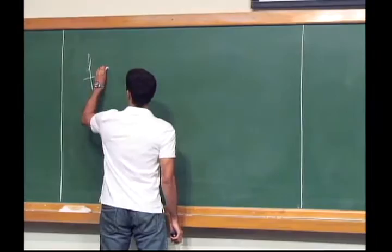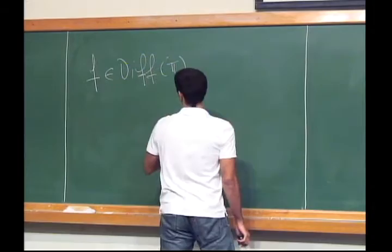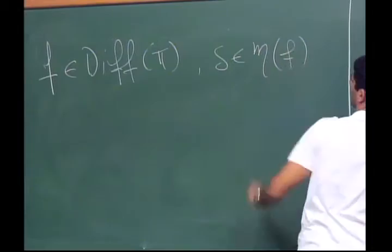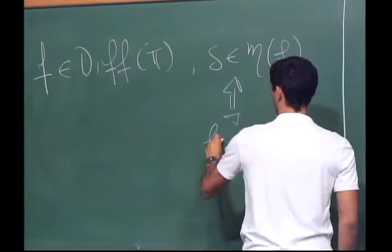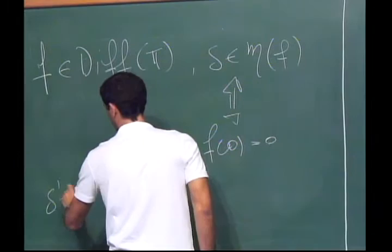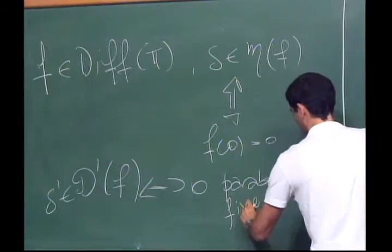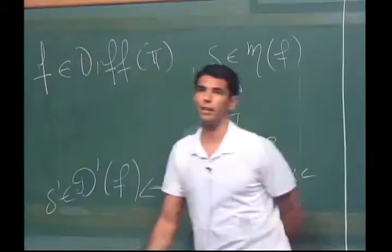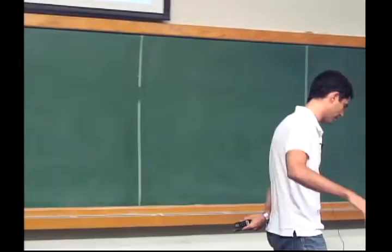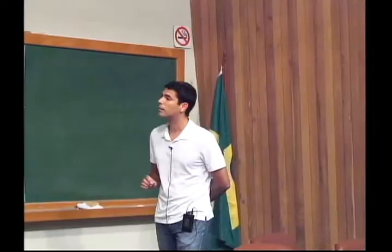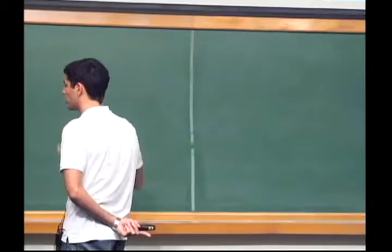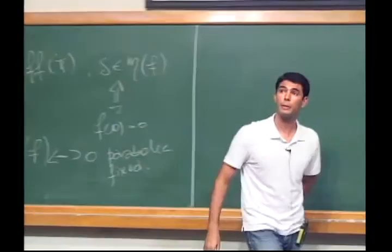If you have a diffeomorphism of the circle, and you know that the delta belongs to the invariant measures, that means that zero is a fixed point. But if you know that the derivative of the delta belongs to the invariant distributions, this is equivalent to saying that zero is a parabolic fixed point. So in a certain way, the fact that this distribution is invariant is telling you something new. This is a rather silly example, but it's a first point where you can see that invariant distributions carry additional information.